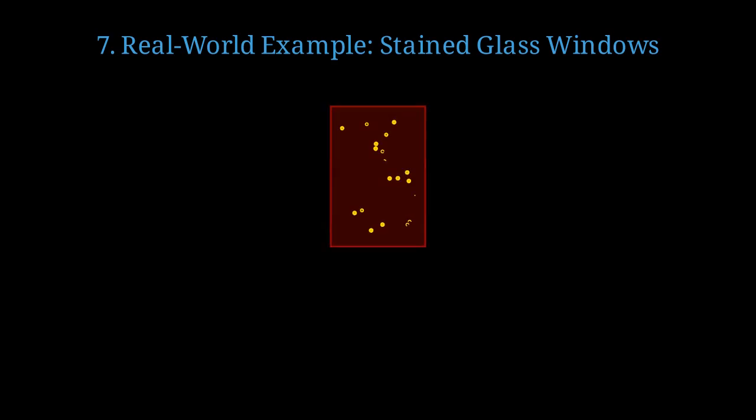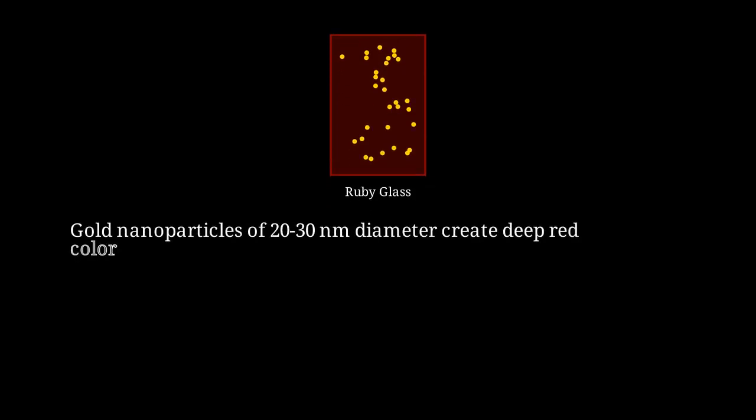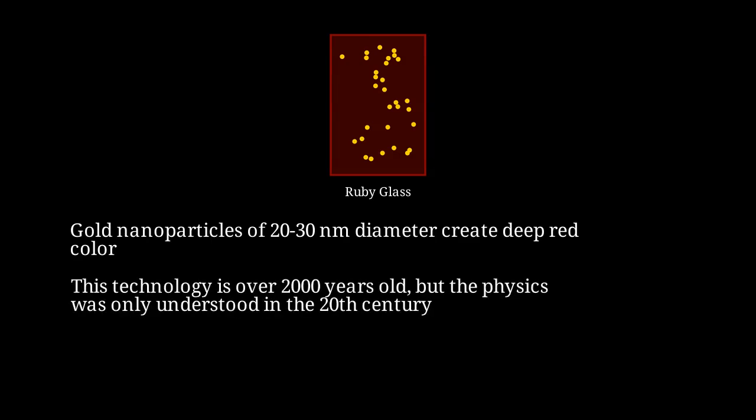Let's look at a beautiful historical example of plasmonic nanoparticles in action. Medieval stained glass windows contain gold nanoparticles that create their brilliant red color. The glassmakers didn't understand the quantum physics, but they empirically discovered how to create these nanoparticles. The deep red color comes from gold nanoparticles, typically 20 to 30 nanometers in diameter, which absorb green light and transmit red and blue. Remarkably, this technology dates back over 2,000 years, but the underlying physics of surface plasmon resonance was only understood in the 20th century.